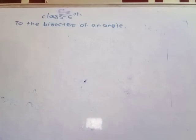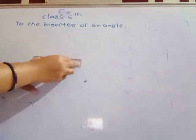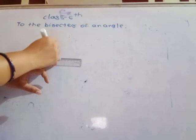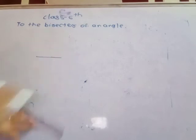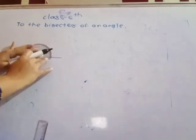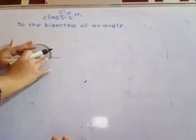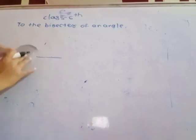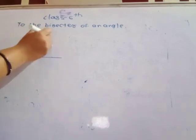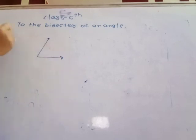Draw a line segment of any length. Then keep the protractor and draw any measure of this angle. Suppose here 70 degrees — so angle ABC is equal to 70 degrees.